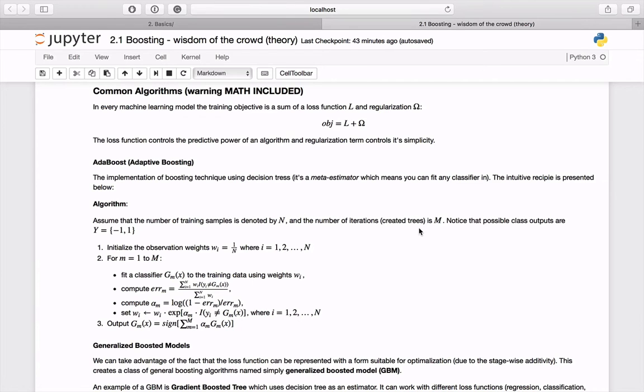Let's try to understand how it works. Let's assume that we are dealing with binary classification problem. The possible outputs from our problem are either minus one or one. We are having N training samples and we are going to feed M trees.